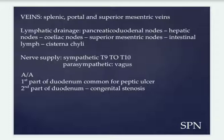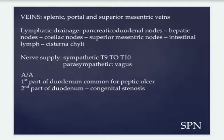Applied aspects: the first part of the duodenum is mainly common for peptic ulcers, because when you take any acidic drink like cola it directly enters into the stomach and then into the duodenum, causing peptic ulcers. The second part of the duodenum can cause congenital stenosis and also obstruction of the bile duct at D2.